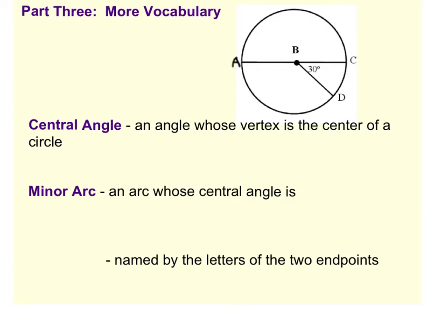If I'm looking at this picture, B is the center of this circle, which means when I write down a central angle, I have to make sure that B is in the middle of the three letters because it's the vertex. So for example, angle ABD is considered a central angle. The vertex is the center of that circle.